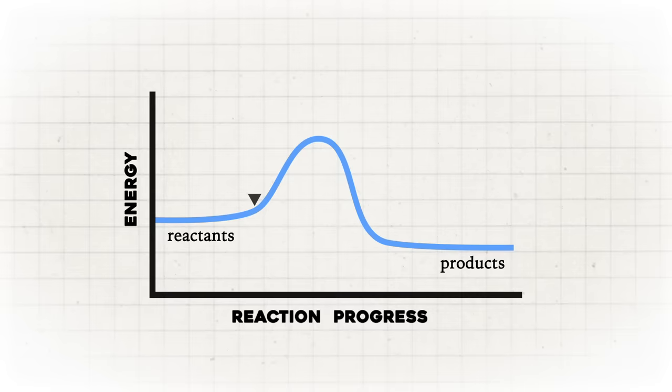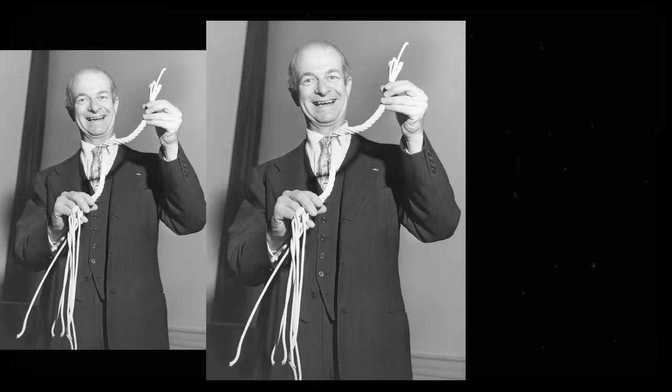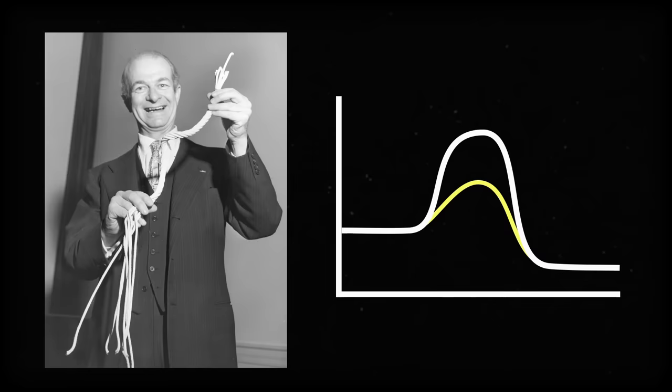Without the energy to get over this hill, the reaction won't happen. In 1948, an American scientist named Linus Pauling had the idea that enzymes can lower the energy hill because of how they fit together with other chemicals in something called transition state binding. Each enzyme is specially built to bind to particular reactants, or substrates, kind of like puzzle pieces.